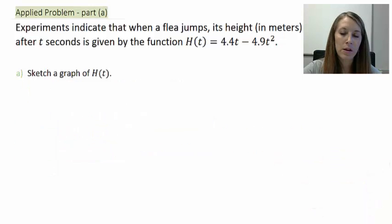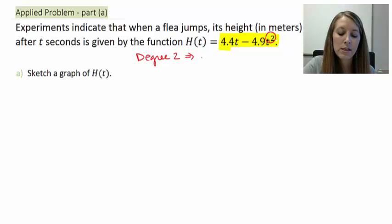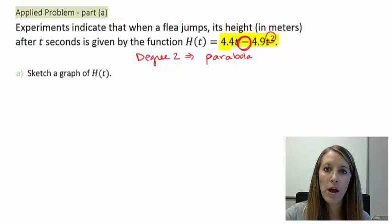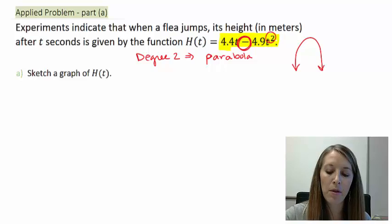Okay. The very first thing that we want to do is we want to sketch the graph of h(t). So, again, our function is 4.4t minus 4.9t squared. Hopefully, you already have a visual of this because this is material that you've learned back in college algebra and reviewed so far this semester. We need to know what degree this equation is. The highest exponent that we see here is 2. So, this is a degree 2 equation. And hopefully, you recall that that is a quadratic equation. Specifically, the graph is a parabola.